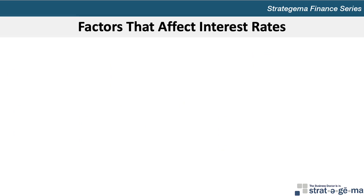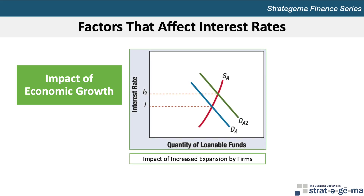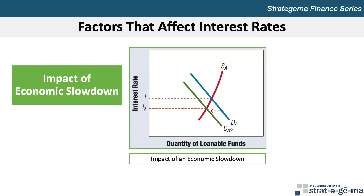Now let's discuss factors that affect interest rates. A number of underlying economic forces can cause a change in either the supply or the demand for loanable funds. Changes in economic conditions can cause a shift of the demand curve for loanable funds, which affects the equilibrium interest rate. As economic conditions become more favorable, businesses expand and households spend more, increasing the demand for loanable funds. The aggregate demand curve shifts to the right from DA to DA2, causing the equilibrium interest rate to increase from I to I2. A slowdown in the economy has the opposite effect, reducing demand and causing the aggregate demand curve to shift left, which then causes the equilibrium interest rate to move down the aggregate supply curve.